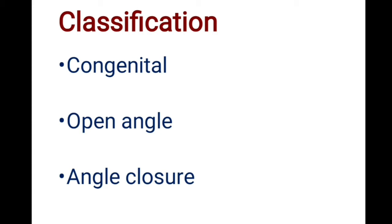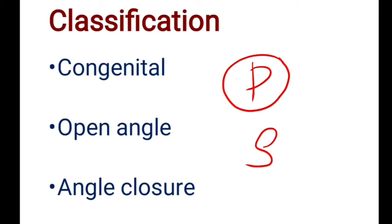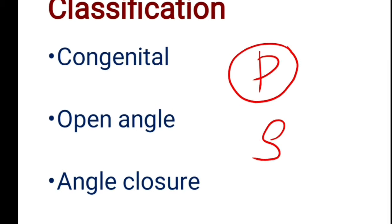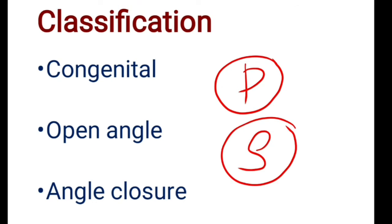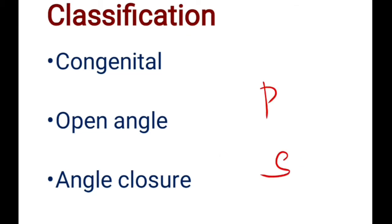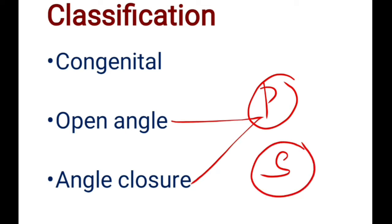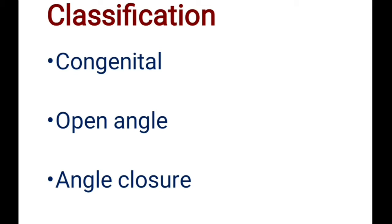There are two more terms used in classifying glaucoma: primary and secondary. In primary glaucoma, the initial events leading to raised intraocular pressure are confined to the angle of the anterior chamber or outflow system only — there are no other ocular or systemic conditions involved. In secondary glaucoma, there are associated ocular or systemic diseases giving rise to raised intraocular pressure. Primary and secondary glaucomas can each be open angle or angle closure type.